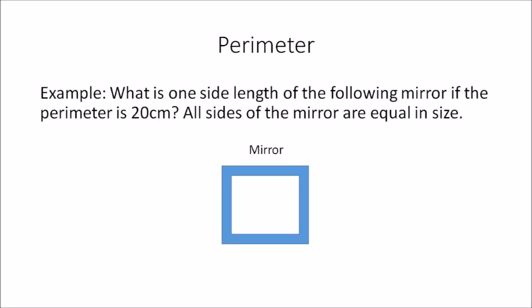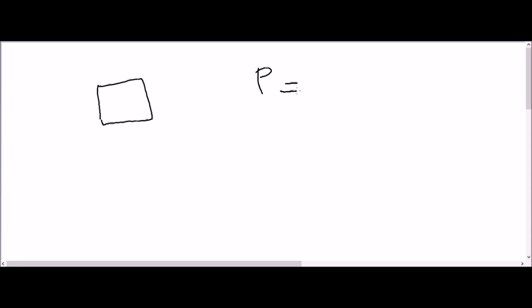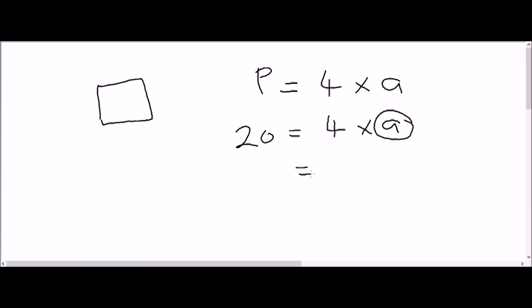This question is slightly different again: what is one side length of a mirror if the perimeter is 20 centimeters and all sides are equal? The diagram shows the mirror is a square. In this example the perimeter is already given and we have to calculate one of the sides. We draw the mirror and write down the same formula: perimeter equals 4 multiplied by a. The perimeter is 20, so 20 equals 4 multiplied by a. To find a, we divide both sides by 4: 20 divided by 4 equals 5. So one side length of the mirror is 5 centimeters.